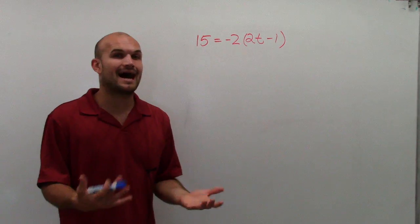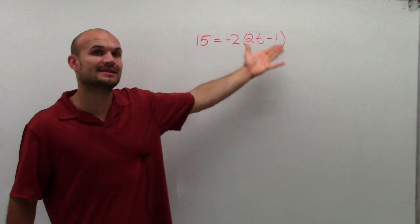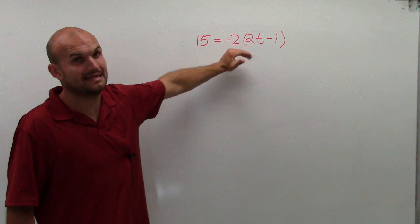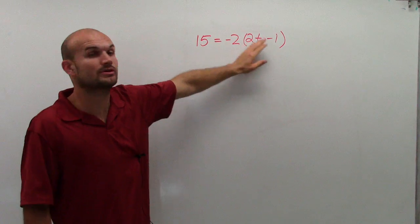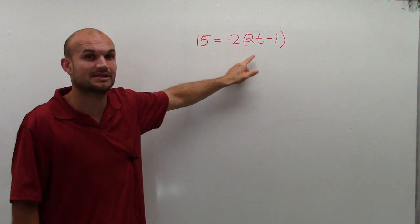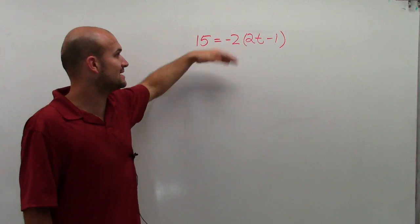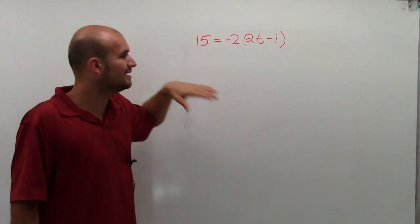Well, one way that I like to undo the operations is I like to complete the distributed property. Now, you can actually get away with this by not doing the distributed property first and then undoing this multiplication, because if I can undo the multiplication on both sides, I can get rid of the distributed property. However,